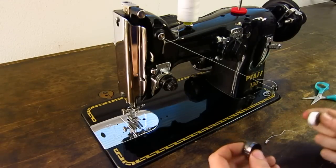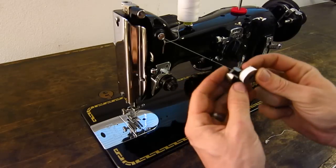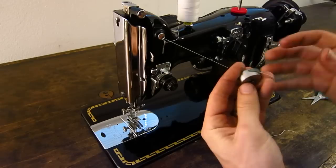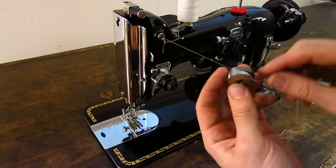And it uses a bobbin case. It's a full rotary hook machine, so you load the bobbin into the bobbin case. It rotates clockwise in the bobbin case. You pull it through the little channel here and right through the top.